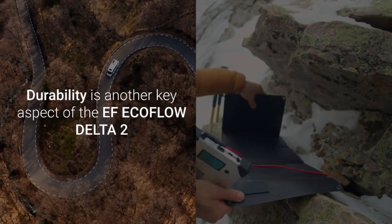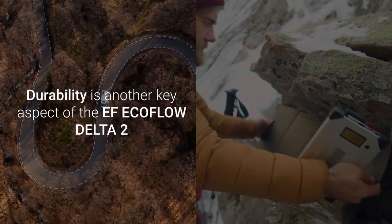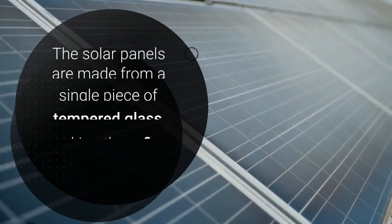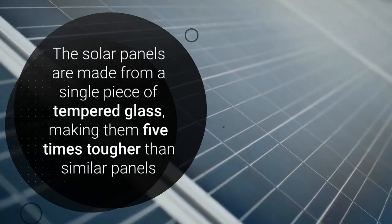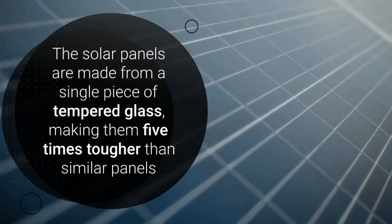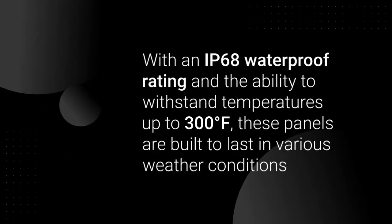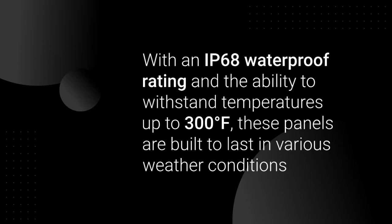Durability is another key aspect of the EF EcoFlow Delta II. The solar panels are made from a single piece of tempered glass, making them five times tougher than similar panels. With an IP68 waterproof rating and the ability to withstand temperatures up to 300 degrees Fahrenheit, these panels are built to last in various weather conditions.